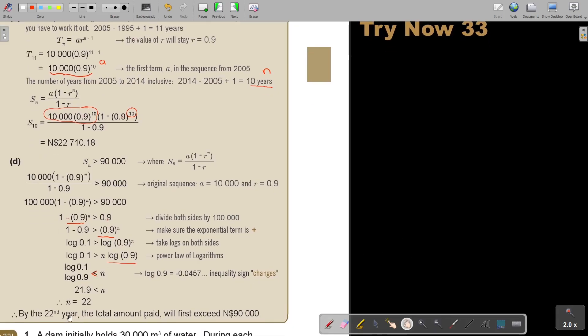And then I divide, and I get that N is bigger than 21.9, so N equals 22. So by this 22 year, the total amount will exceed 90,000. It's quite a lot of things, and you have to, if I think back of this sum, you have to start with a new sequence in every sum, or focus on a new sequence, before you just work on your original sequence.